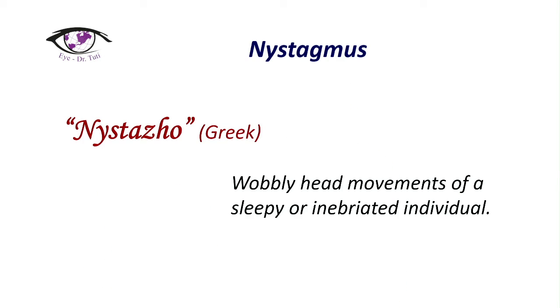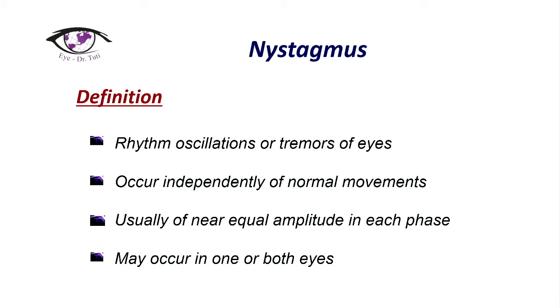Let's start with a little bit about nystagmus. Nystagmus comes from the Greek word 'nystagmus,' which means sleepy. The definition of nystagmus is the rhythmic oscillation or tremor of the eyes, occurring independently of normal movements, usually of near equal amplitude in each phase, and may occur in one or both eyes — though usually in both eyes.